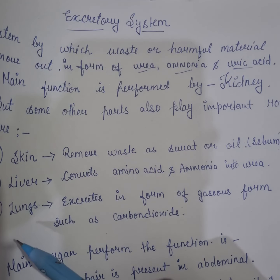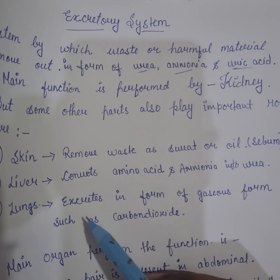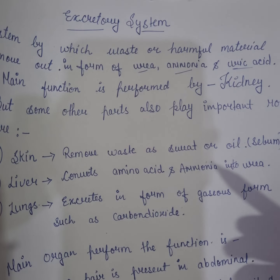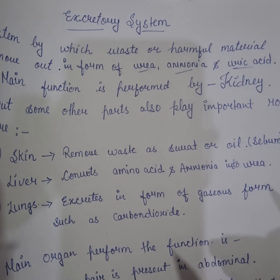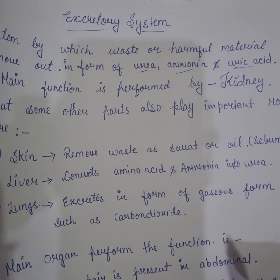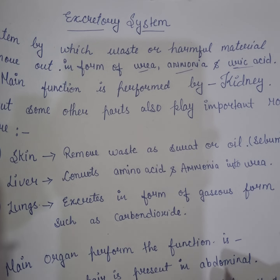Next are the lungs. The lungs are used in our respiratory system for the exchange of gases. Oxygen is useful for us, but carbon dioxide in our body can be harmful. The lungs remove carbon dioxide, so they also perform excretory work.